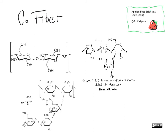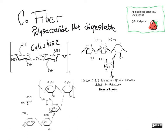The last thing to talk about here is fiber. Fiber is any polysaccharide — carbohydrates that are polymers of sugars — that you can't digest. That includes cellulose, and a bunch of things like it. Notice that indigestible bond where some of the OH groups point down and some point up. So we have cellulose, hemicellulose, and xanthan gum, which you've probably seen as a thickener in ingredient lists.